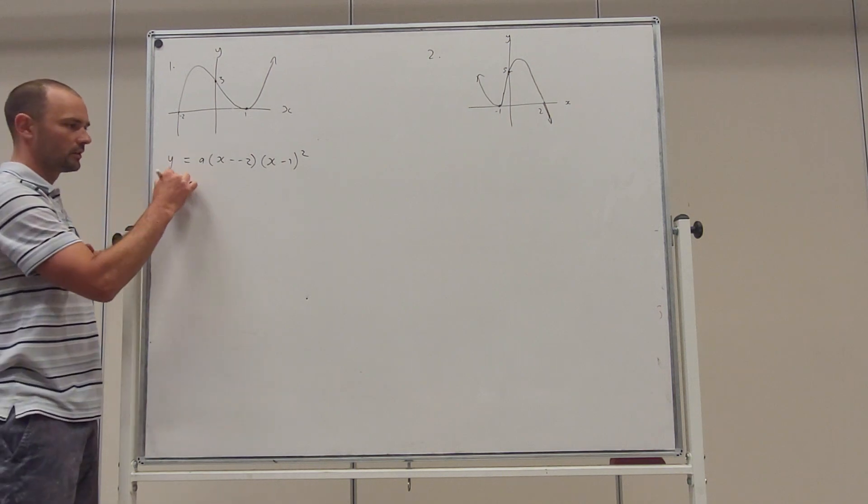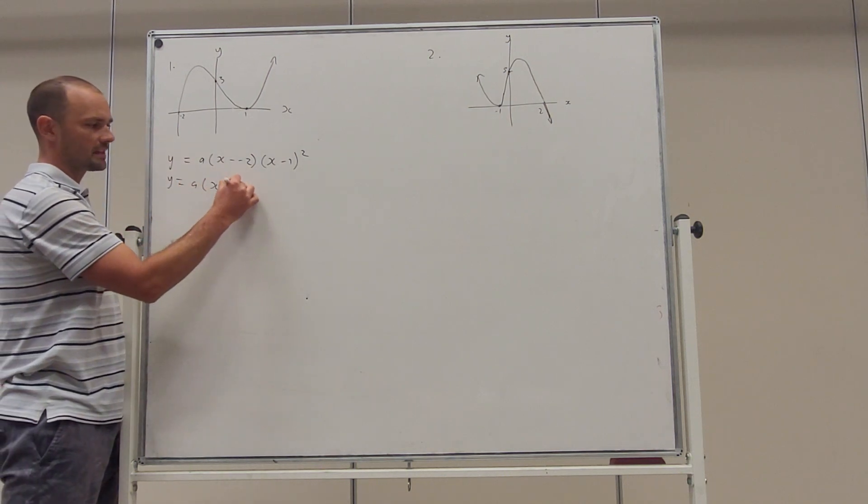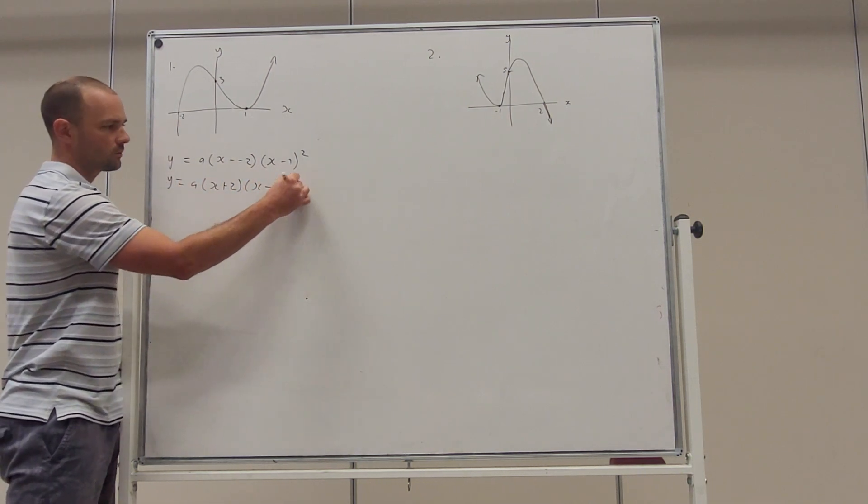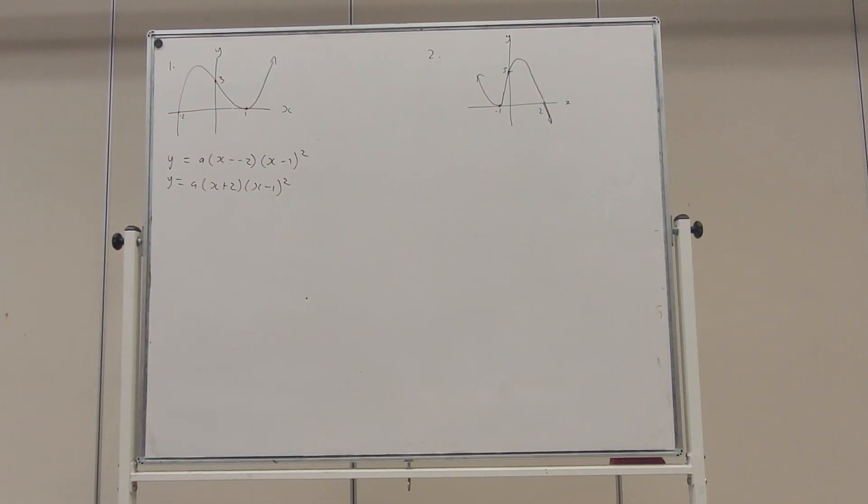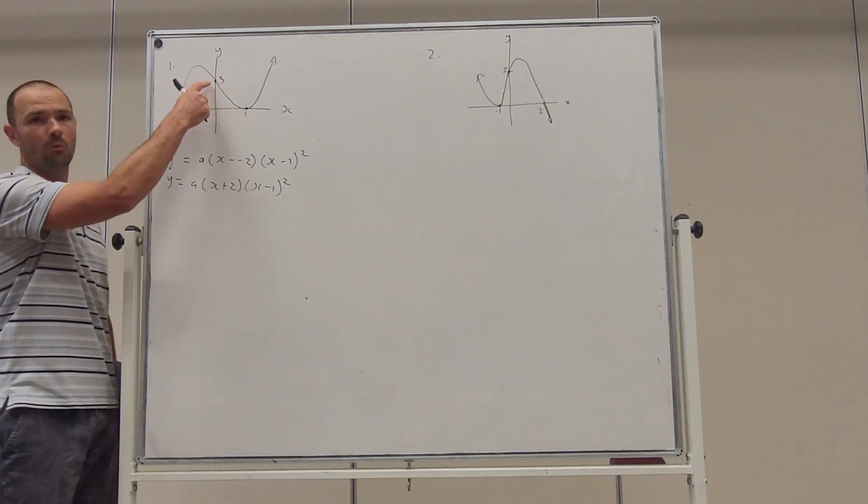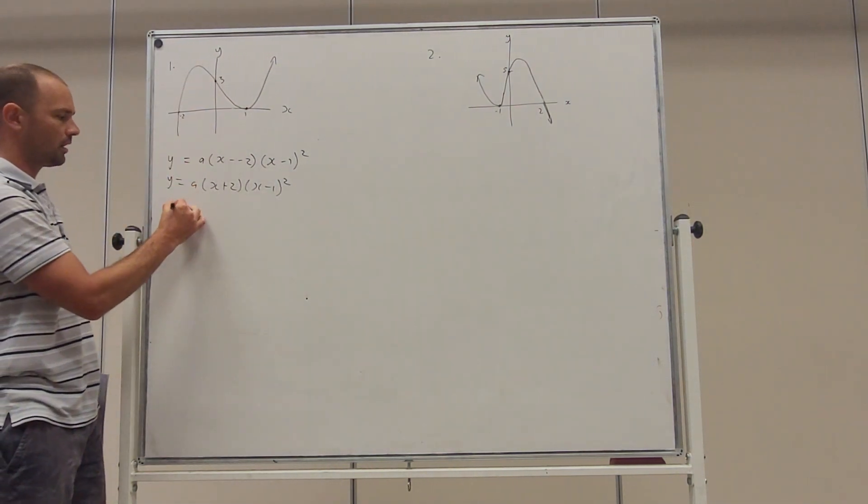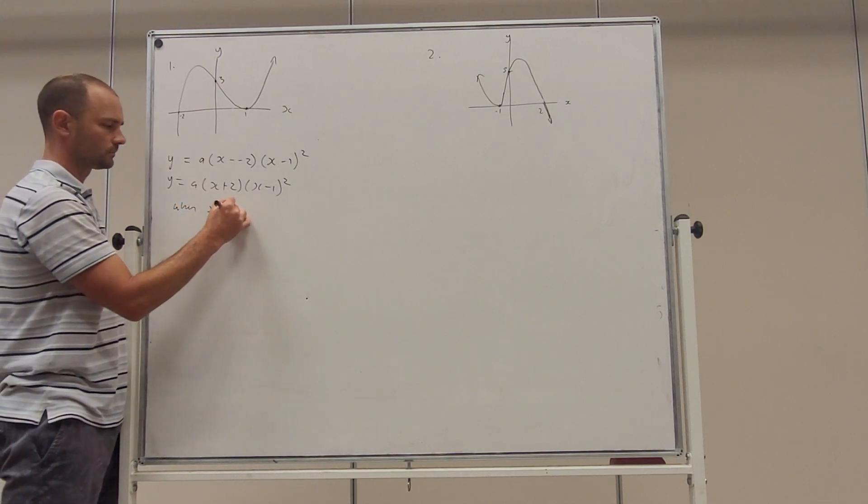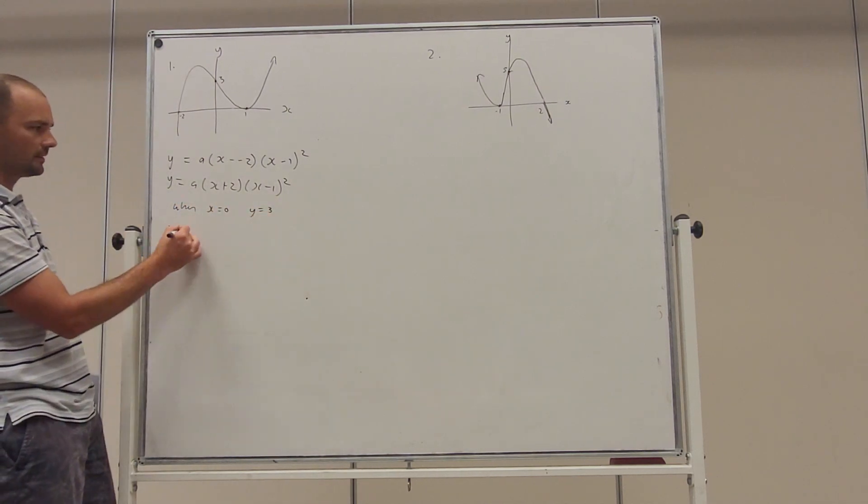So the polynomial is x plus two x take one squared. In order to determine the value of a, we need to use an extra piece of information we have. When x is zero, y is three from the y intercept. Plug that in.